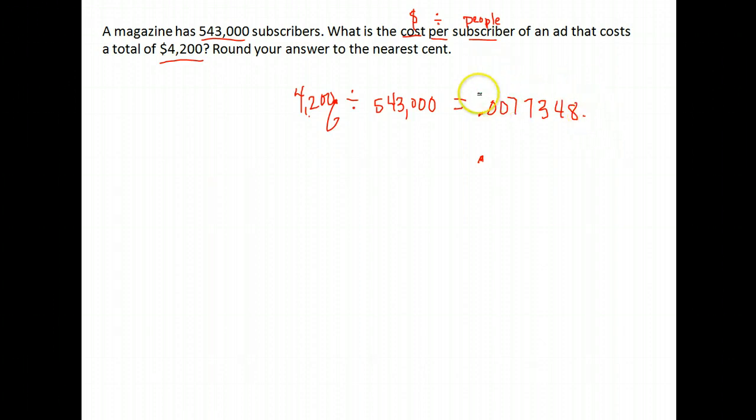Well, this is in money. They want us to round to the nearest cent. So where are cents? Remember, cents are two places after the decimal. Right now we have zero cents. But we round to the nearest cent and so we look at the next number is a 7. That asks us, it's bigger than 5, so we round up to 1. So the average cost per subscriber to advertise is 1 cent.